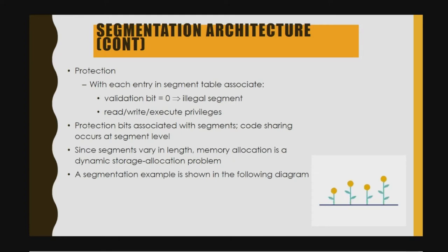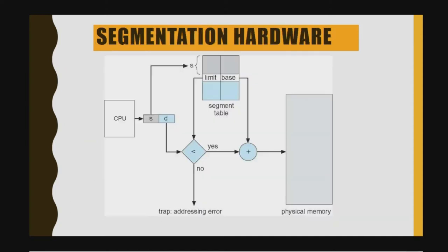A segmentation example is shown in the following diagram. From the CPU it gives the segment number and offset, and then it checks whether it is less than or not within the limit and the base. The segment table stores the limit and the base. If valid, it adds with the base and then goes to the physical memory; otherwise it results in an addressing error in the logical part.